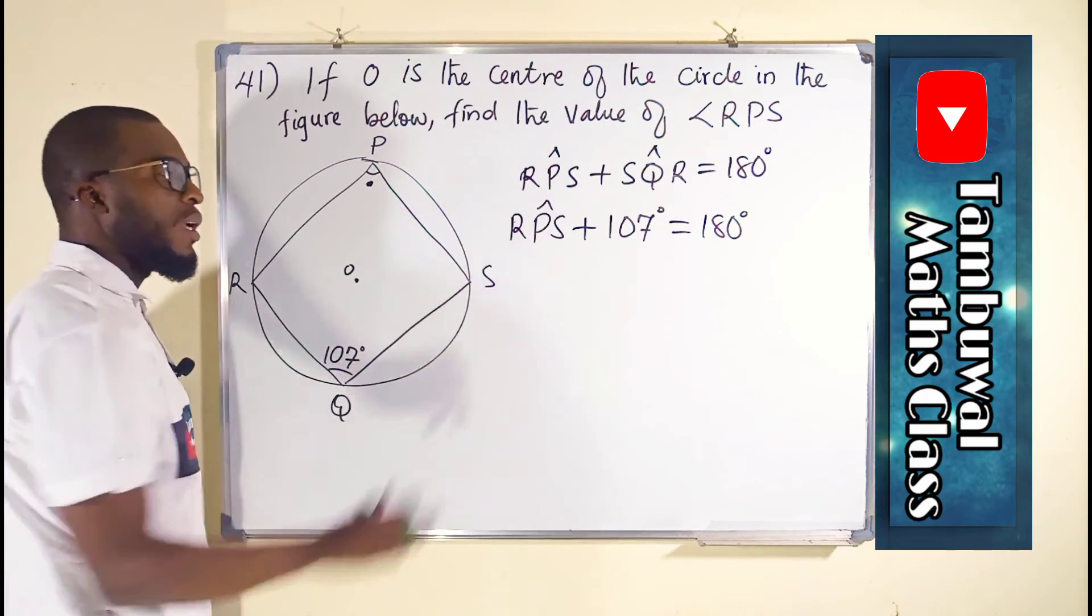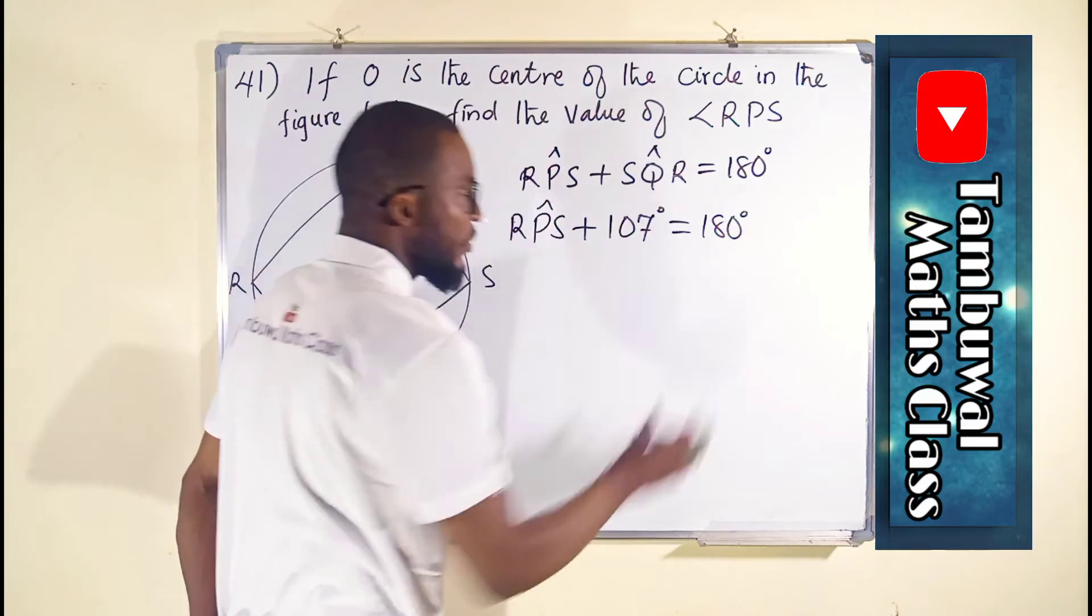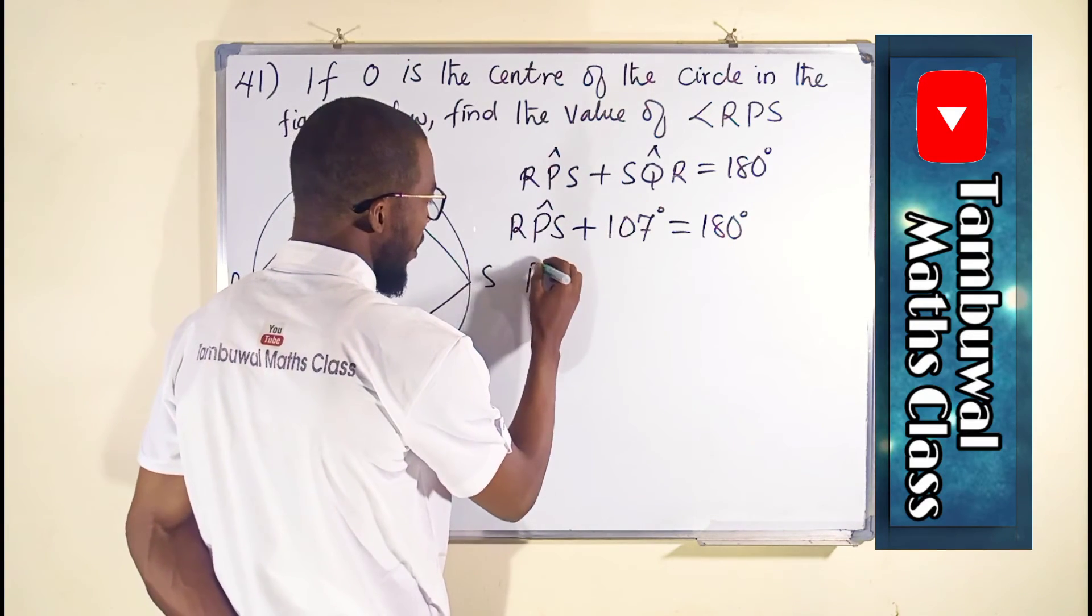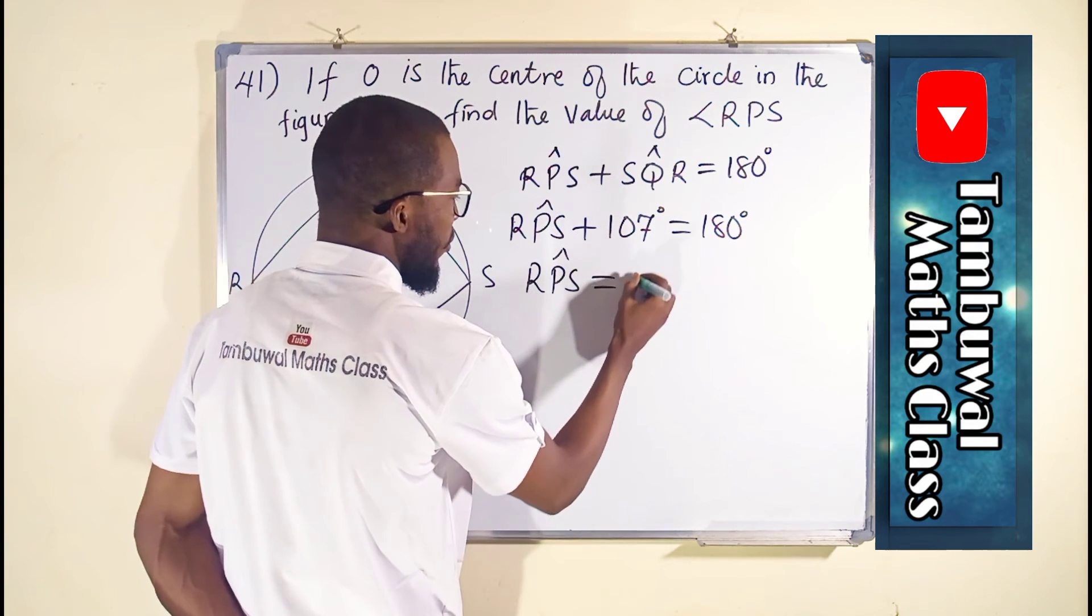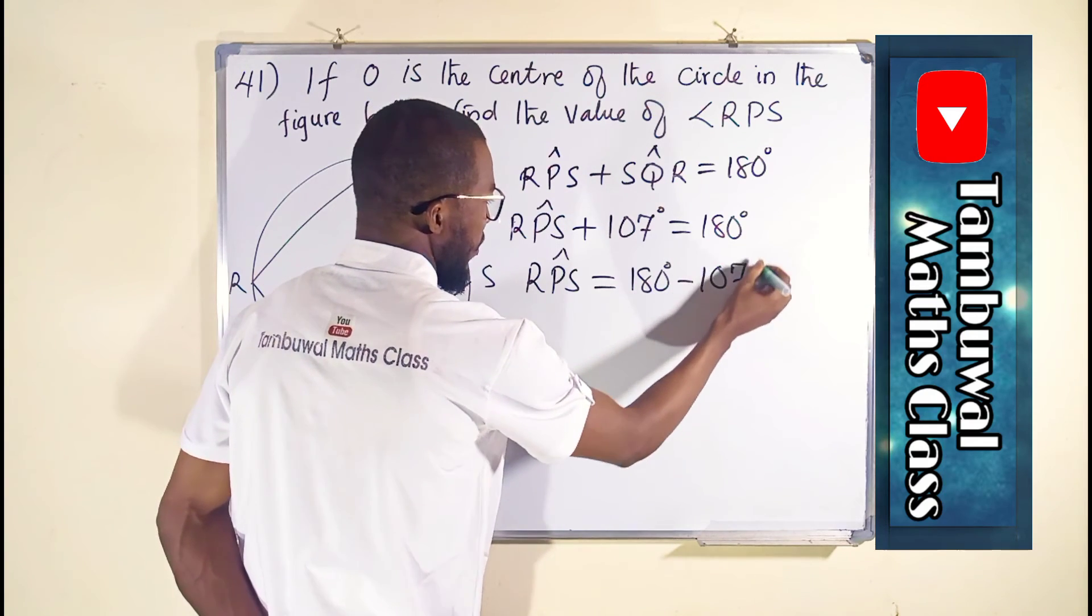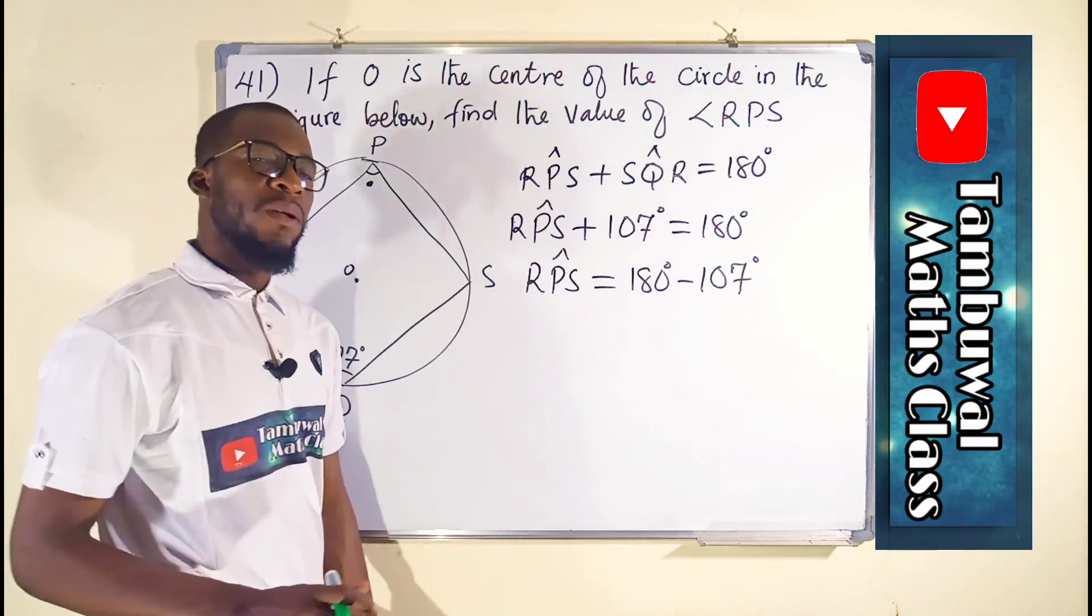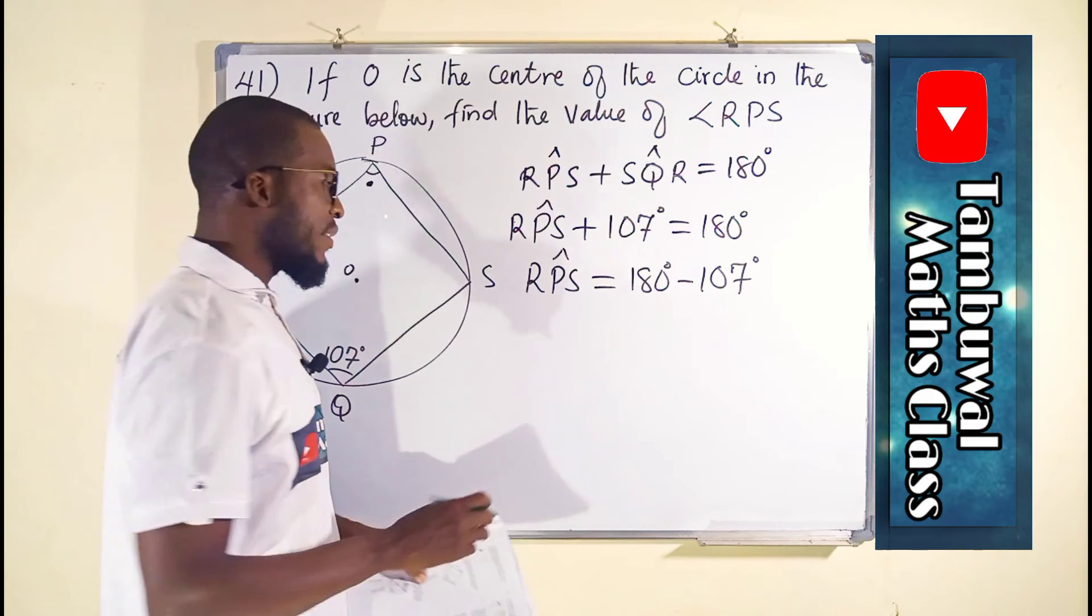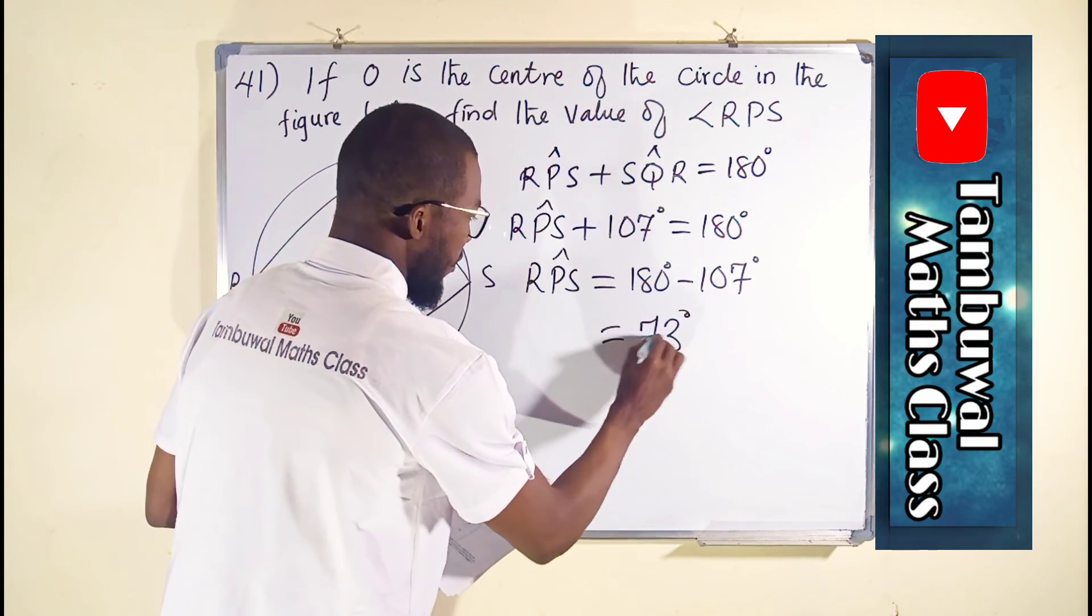This is what we are looking for, so we can make it the subject of the relation by taking 107 to the right, which is going to make it negative. Hence, angle RPS will be equal to 180 degrees minus 107 degrees. 180 minus 107 is equal to 73 degrees.